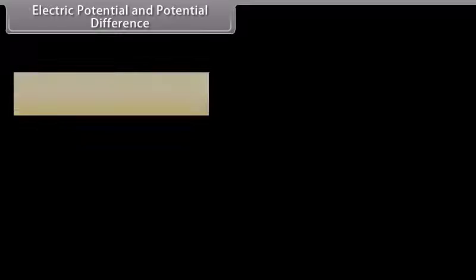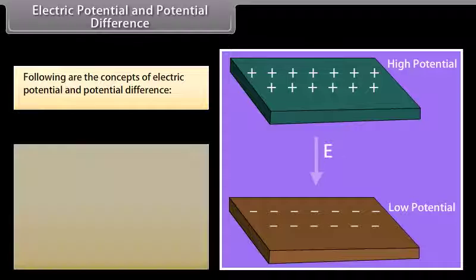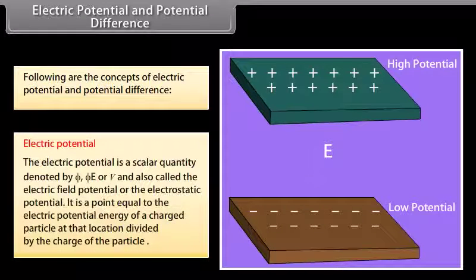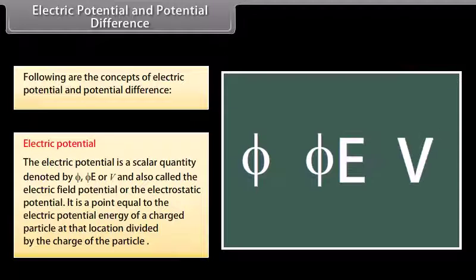Electric potential is a scalar quantity denoted by E or V. It is equal to the electric potential energy of a charged particle at the location divided by the charge of the particle.